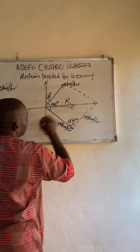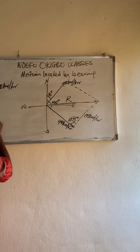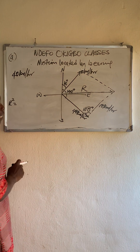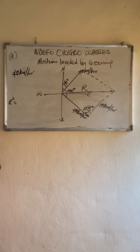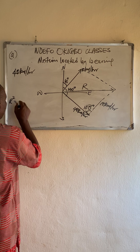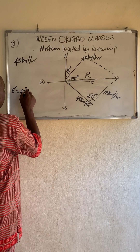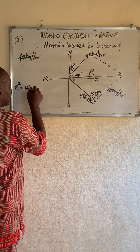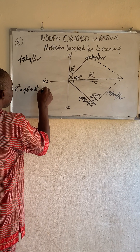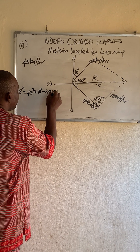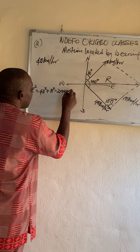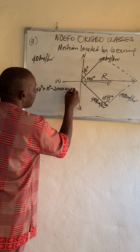So the resultant: R squared — because this angle is 100 degrees, we can use the cosine rule. We have 40 squared plus 10 squared minus 2 times 40 times 10, times cosine of 100 degrees.